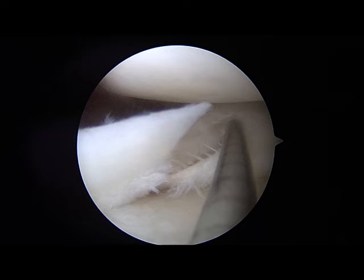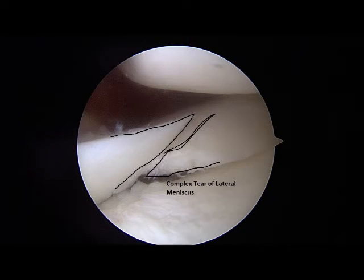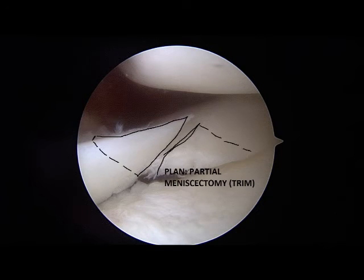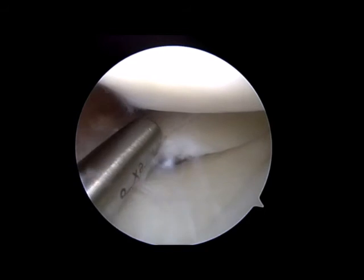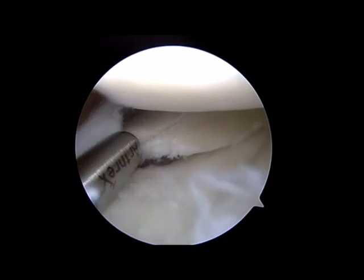My surgical probe is brought in. I inspect the tear. The various planes are identified. It's determined that it is a complex tear within an avascular zone. Therefore, I make plans to trim the main fragments. A shaver is brought in. The shaver is an instrument that is used to trim loose cartilage and meniscus fragments. The main fragments are trimmed back.